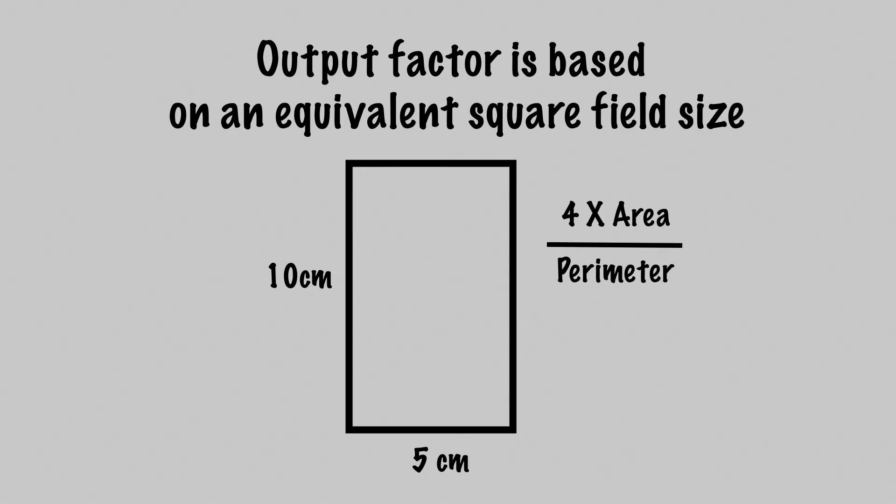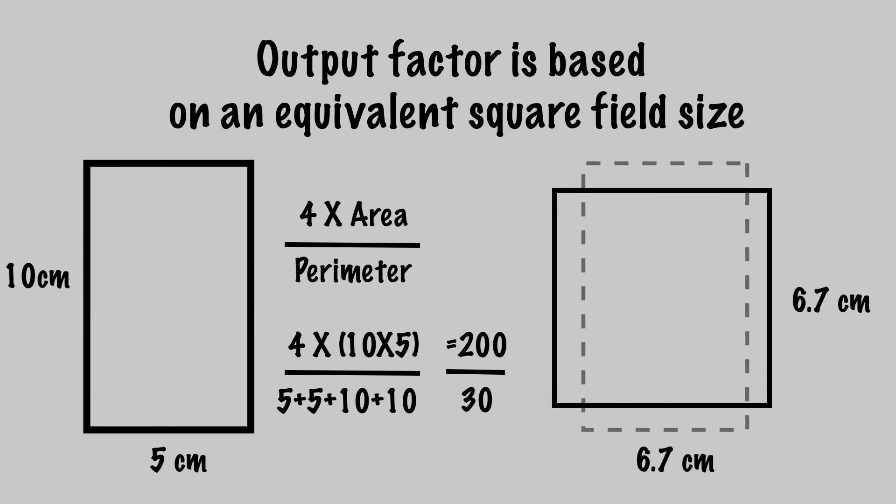For example, if a field measures 5 by 10 centimeters, the area is equal to 5 times 10, which is 50. And 4 times 50 equals 200. Then we divide all of this by the perimeter of 30. This gives us an equivalent square field size of 6.7 centimeters. This value can then be used when setting up our MU calculation.